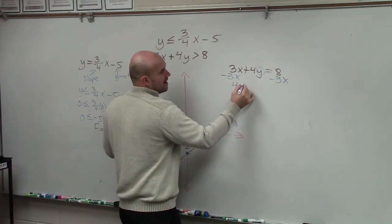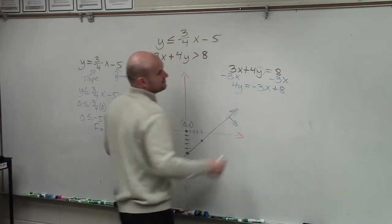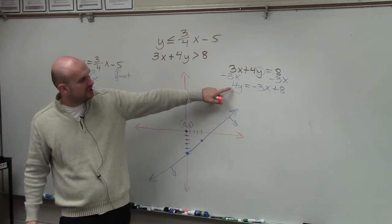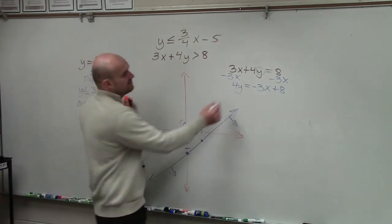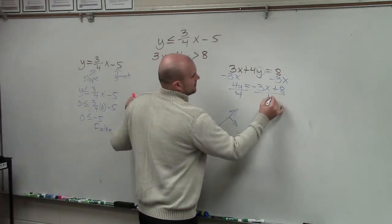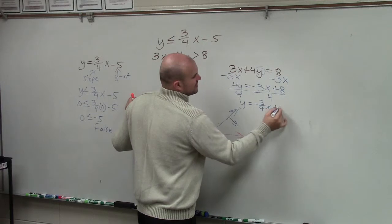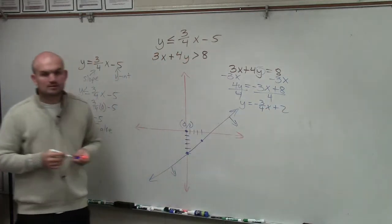So the first thing I do is I subtract the 3x on both sides. Now I have 4y is equal to a negative 3x plus 8. Now, to solve for y, I divide by 4. y is equal to a negative 3 fourths x plus 2. Does everybody see that?